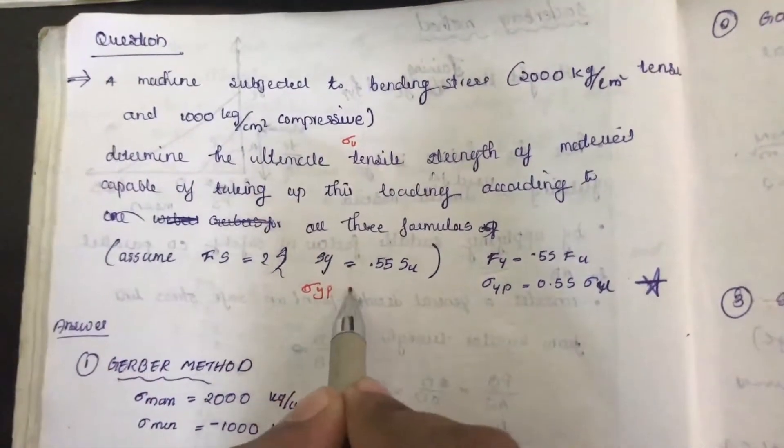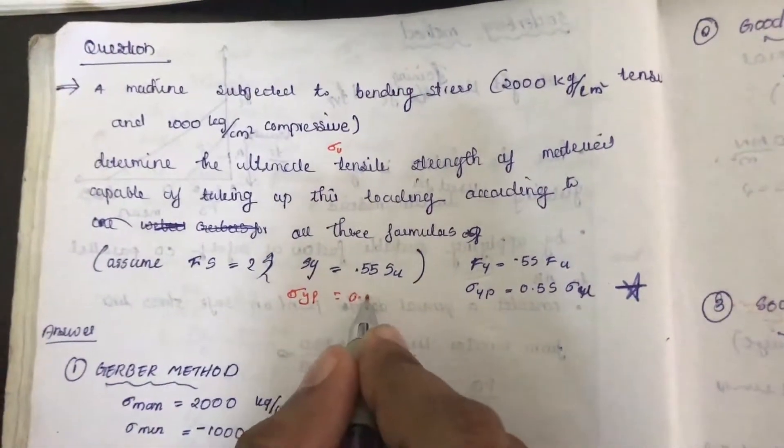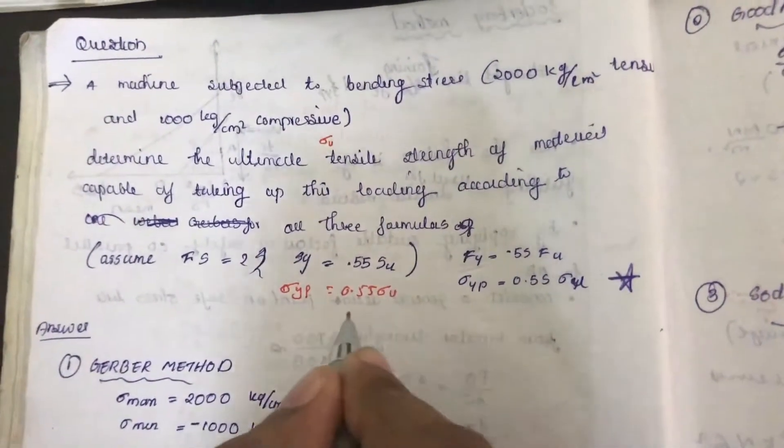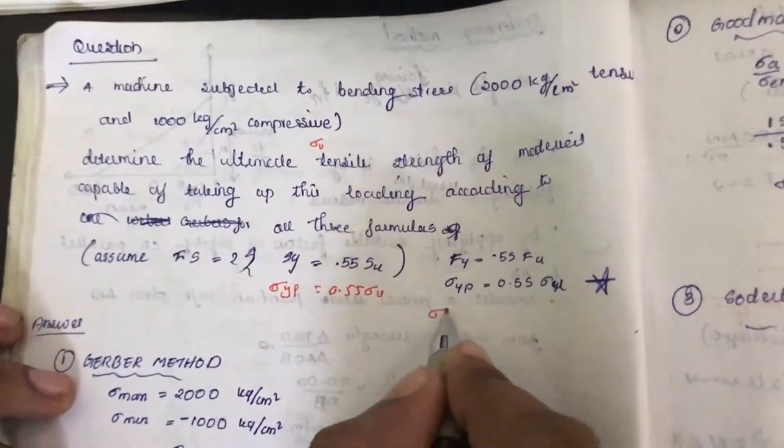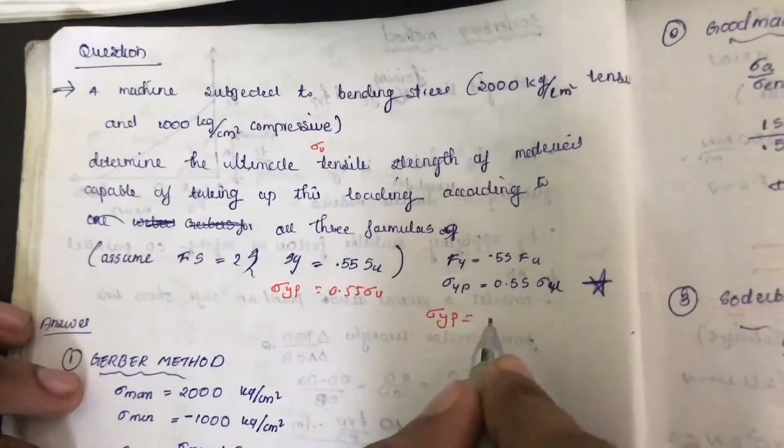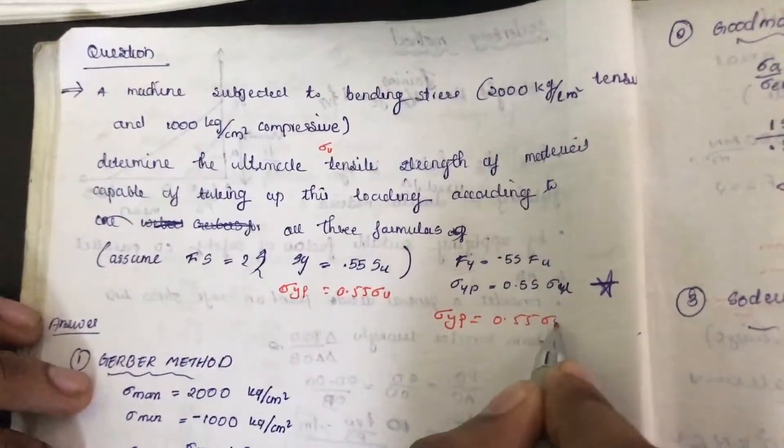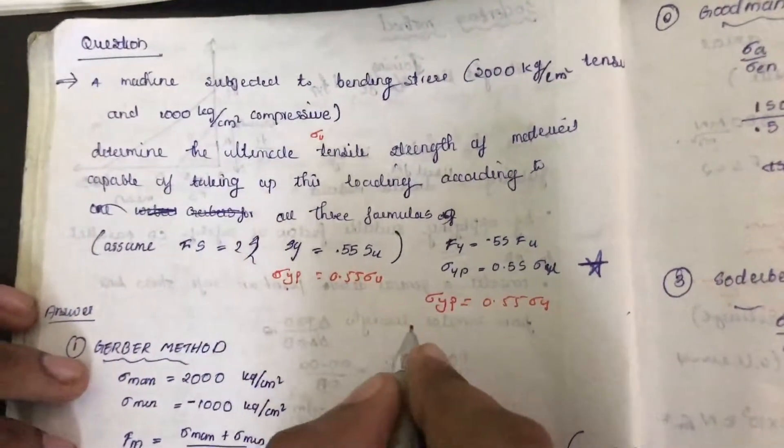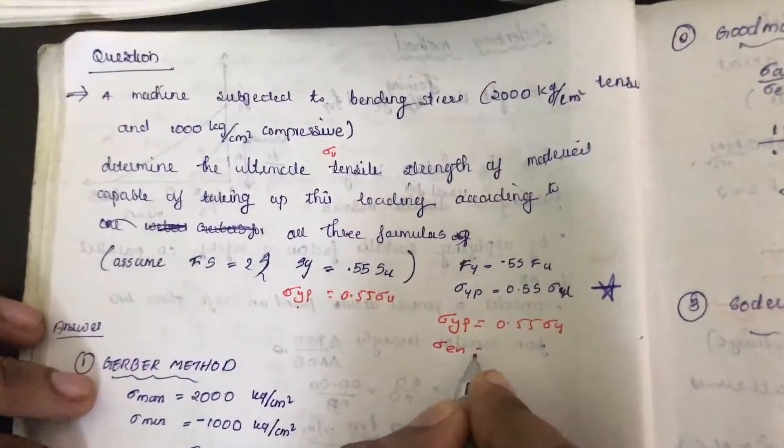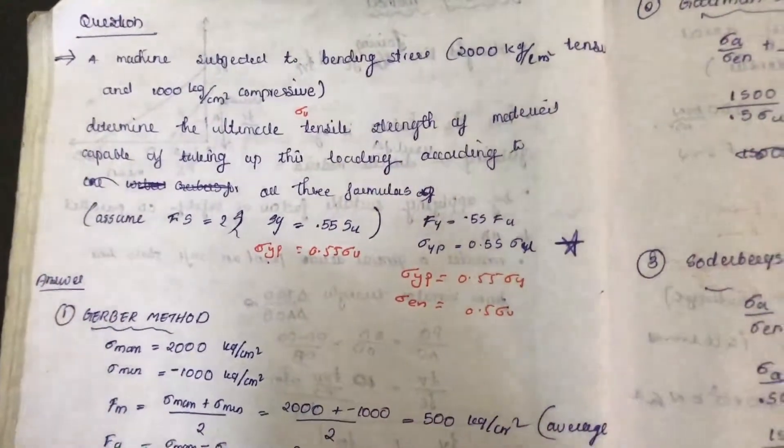Sigma yp, the tensile stress, is assumed to be 0.55 sigma u, that is 0.55 times ultimate strength if not given. Sigma en, the endurance limit, is assumed to be 0.5 sigma u if not given in the question.